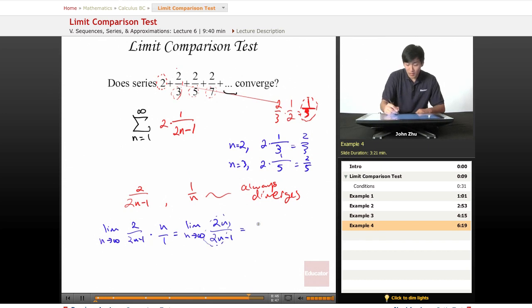And by the rational rule, we take 2n divided by 2n, and we get 1, which is a finite non-zero number, which means that they both, 1 over n and 2 over 2n minus 1, must both converge or diverge.